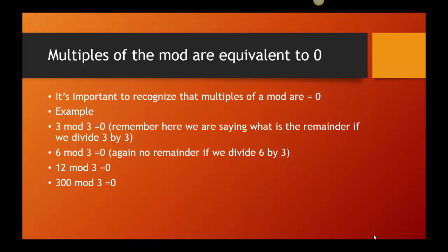6 mod 3 is also 0. When I divide 6 by 3, I don't have a remainder. When I divide 12 by 3, I don't have a remainder. If I divide 300 by 3, I don't have a remainder.